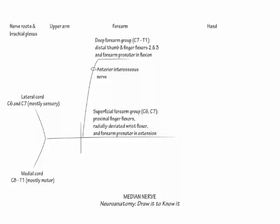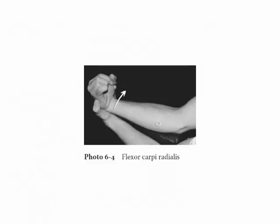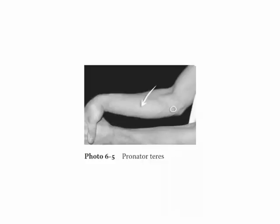Flex your wrist in a radial direction to demonstrate the action of flexor carpi radialis. To demonstrate the action of pronator teres, extend your forearm at the elbow and pronate it against resistance.